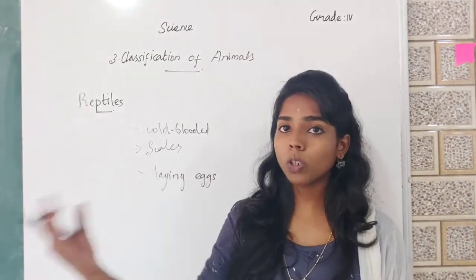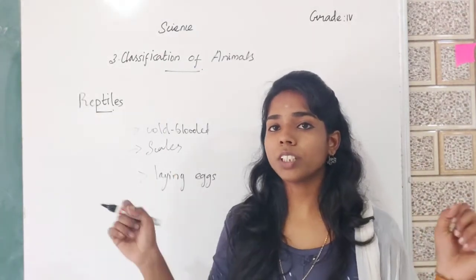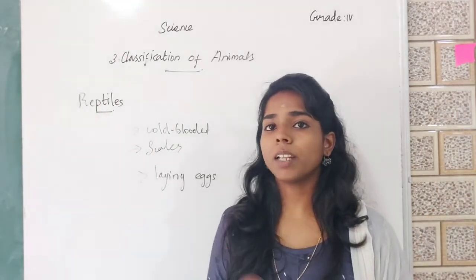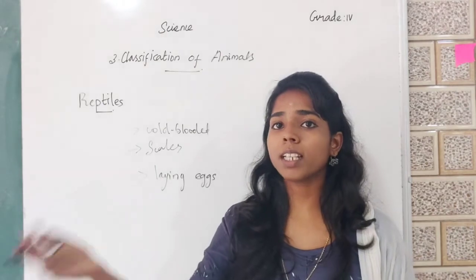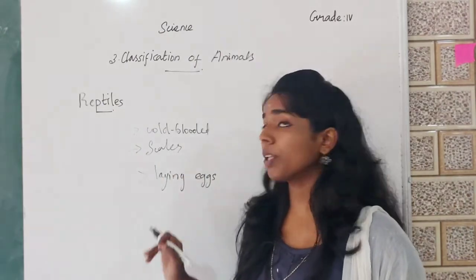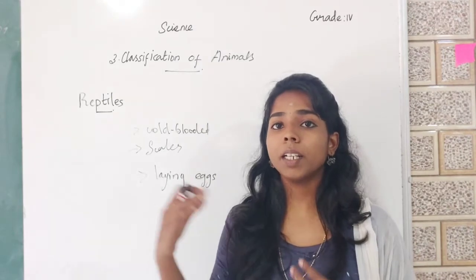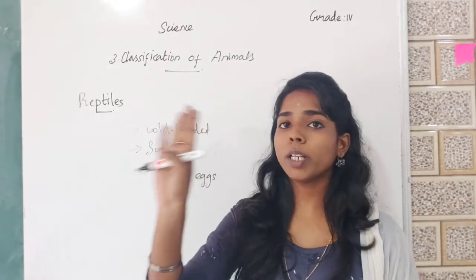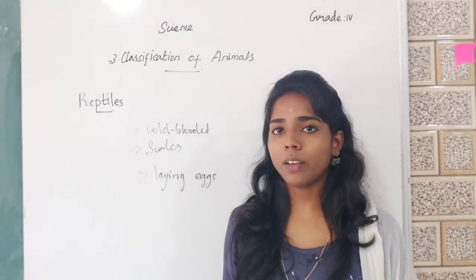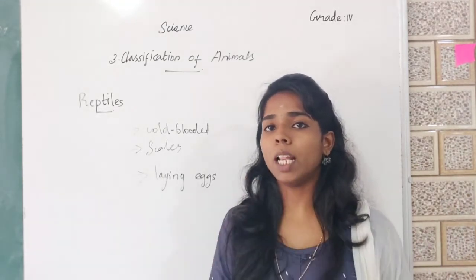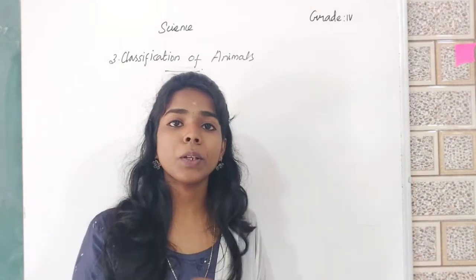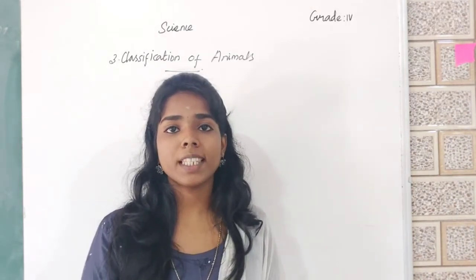So reptiles are cold-blooded animals. Generally, reptiles' bodies are covered with scales, and we learnt about the process of molting and camouflage. Reptiles reproduce by laying eggs, and they have four limbs to move, but snakes do not have legs and move with the help of scales. The next group is amphibians.